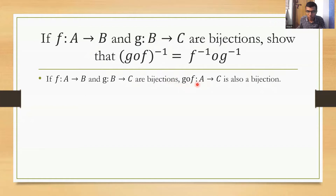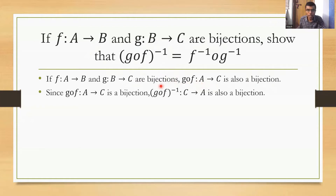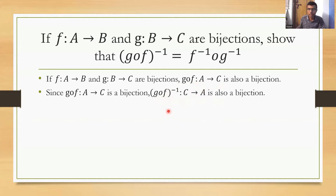Now, since g∘f maps A to C is a bijection, (g∘f)⁻¹ maps C to A is also a bijection. Remember: if f maps A to B is a bijection, then f⁻¹ maps B to A is also a bijection. So similarly, (g∘f)⁻¹ maps from C to A. Observe that g∘f maps from A to C, and (g∘f)⁻¹ maps from C to A — the domain and co-domain get exchanged.